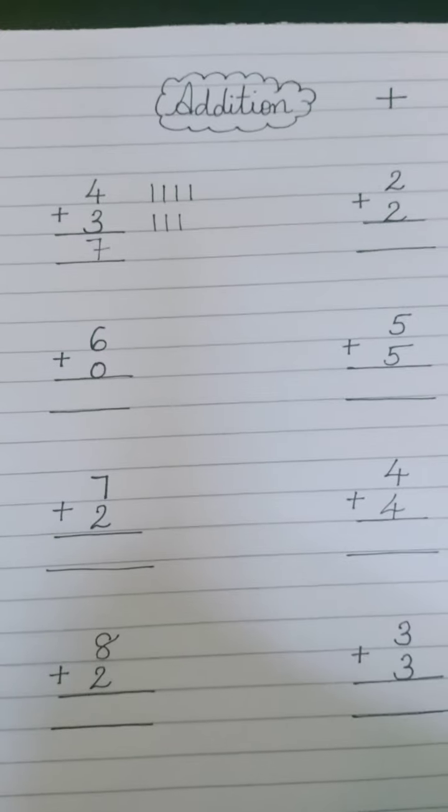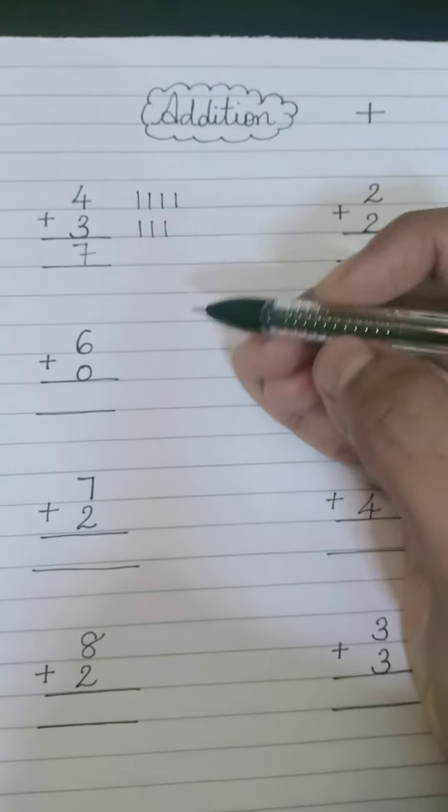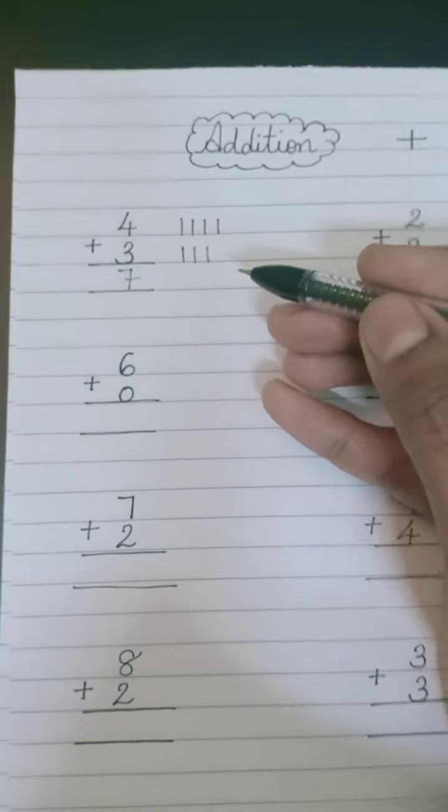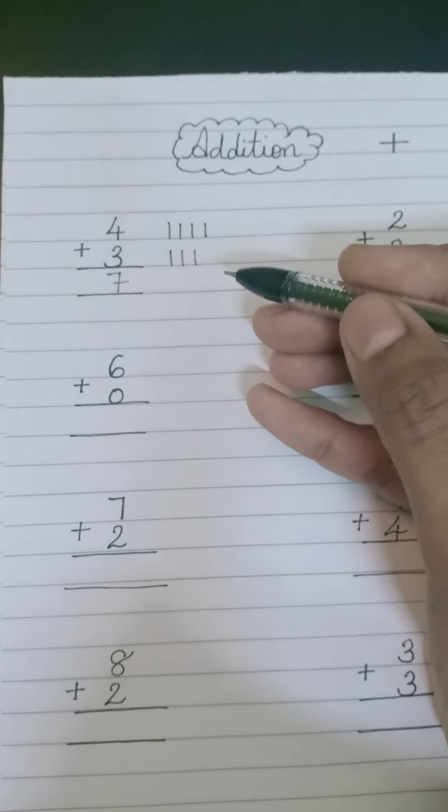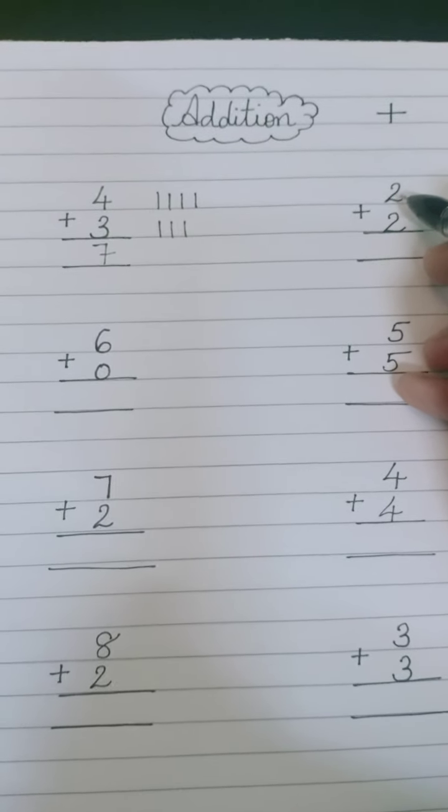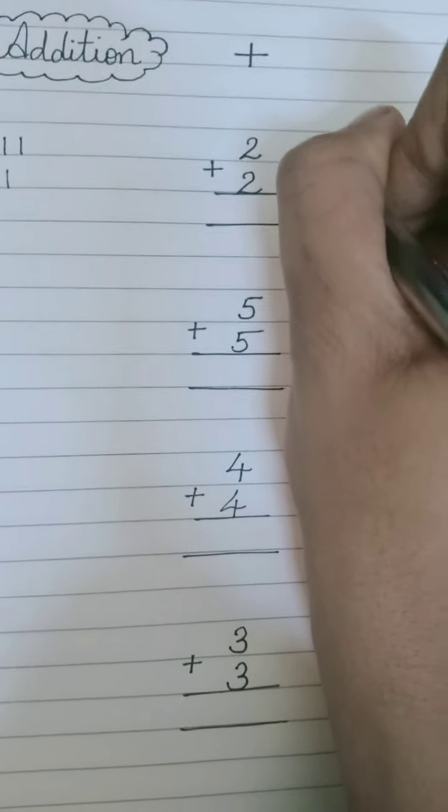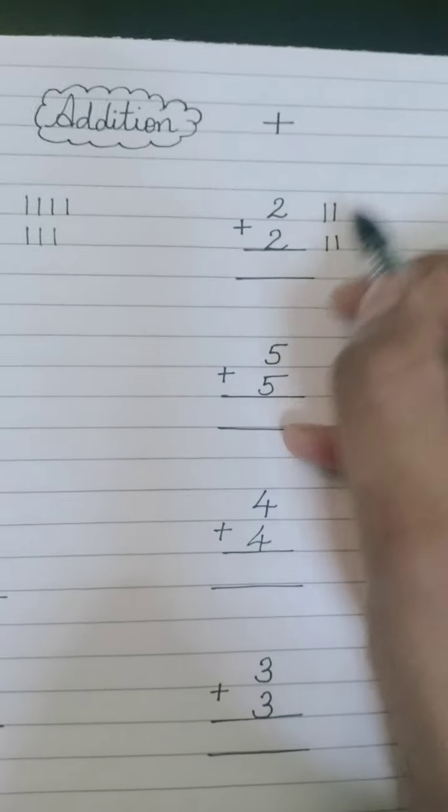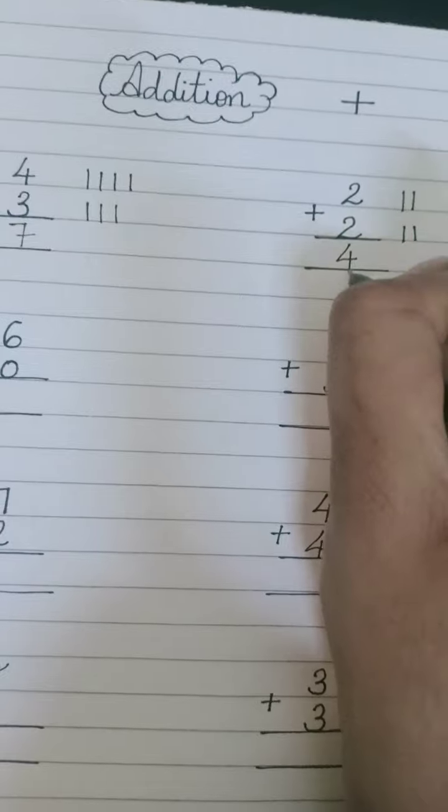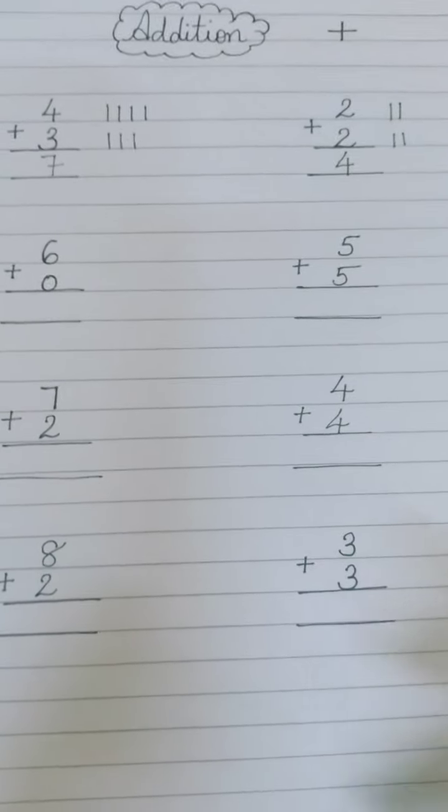If your child cannot calculate in mind or on fingers immediately, you can use this line method. You don't need to stress. Every child's learning time is different. Some children understand quickly, some take longer. But we should not put pressure on anyone, because every child is different. Now let's do this one: Two is written on top and two is written below. Draw one, two lines, then below again one, two. Now add both lines: one, two, three, four. So the answer is four. Children coming from UKG already know this, so they will understand easily.